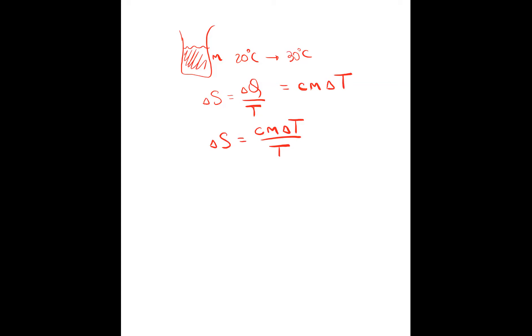There is one subtle difficulty here. As I heat up, my temperature changes — temperature isn't always the same. Initially I was at 20 degrees, and when I got my first joule of thermal energy, my entropy changed by one over my initial temperature. But as my temperature grows to 25 degrees, each joule gains me one joule divided by this higher temperature. So since my temperature changes, I have to integrate: my total change in entropy will be an integral over C·m·dT divided by T.